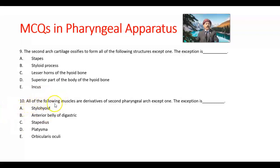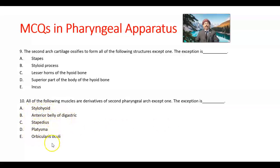Question number 10. All of the following muscles are derivatives of the second pharyngeal arch except one. The exception is the anterior belly of the digastric, which comes from the first pharyngeal arch.